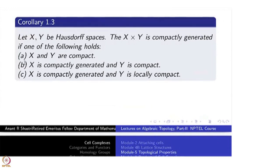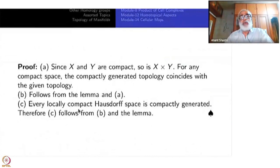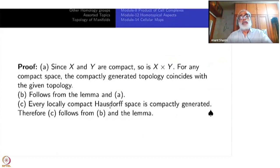Part C: X is compactly generated and Y is locally compact. C follows from B and the lemma by interchanging the role of where you take the compact subsets. Every locally compact Hausdorff space is compactly generated. So you interchange the roles: take compact subsets K of Y, and use B to conclude. That is all.